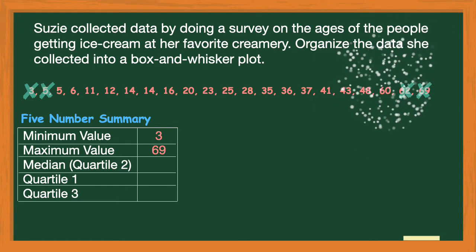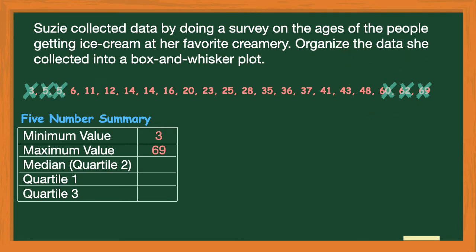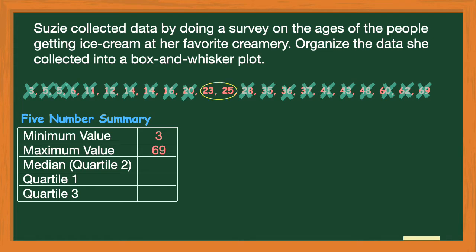Let's continue finding the median. I keep eliminating the smallest and then the largest. It gets a little tedious, but this is what we need to do to find our median. Now I see I have two numbers left — 23 and 25. When I use this process of elimination and end up with two numbers, I need to find the middle by finding the average or mean: 23 plus 25 equals 48, and 48 divided by two is 24.